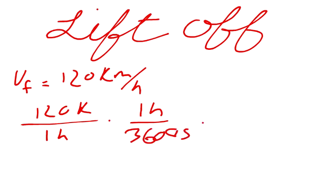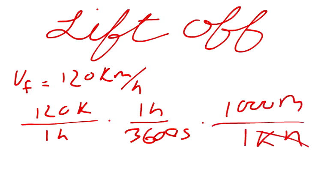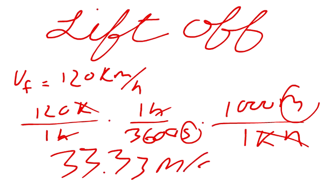and times that by 1000 meters over 1 kilometer. The kilometers will cancel out, and the hours will cancel out, leaving us with meters per second. That answer is 33.33 meters per second, which is our final velocity.